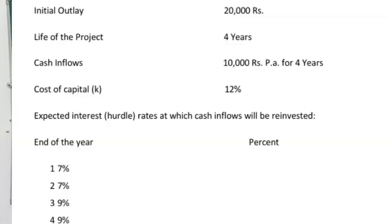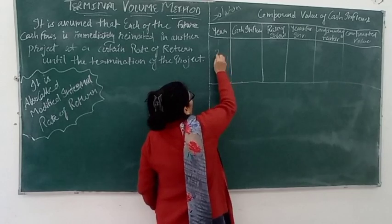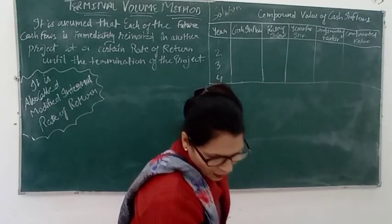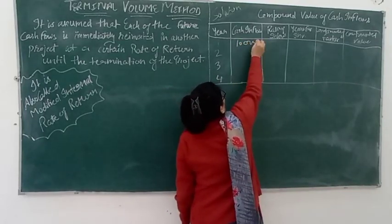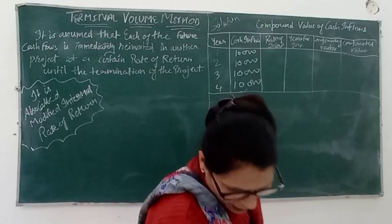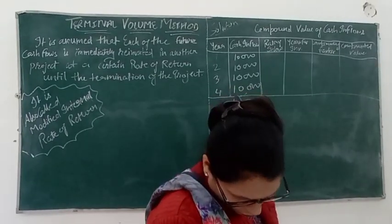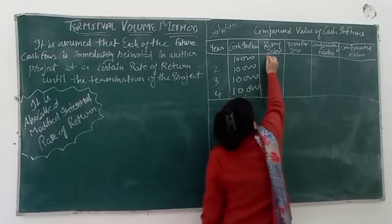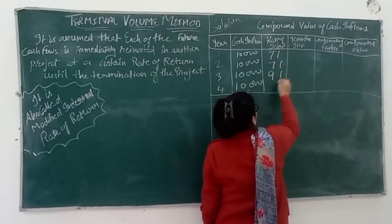So I have a problem displayed. The initial outlay is 20,000, the life of the project is 4 years, the cash inflow is 10,000 per year for 4 years, and the cost of capital is 12%. The expected interest rate at which we have to reinvest the cash inflows varies: for years 1 and 2 it is 7%, and for years 3 and 4 it is 9%. Each year the cash inflow is 10,000.